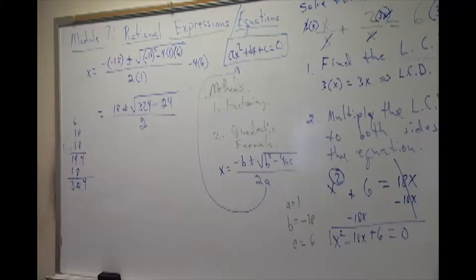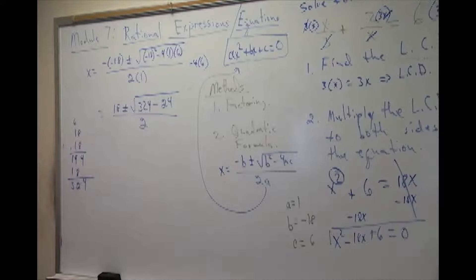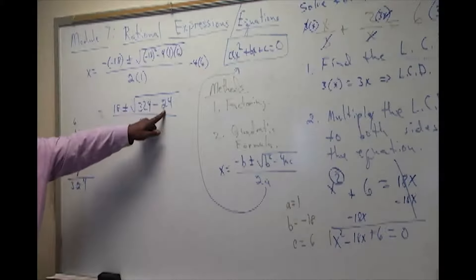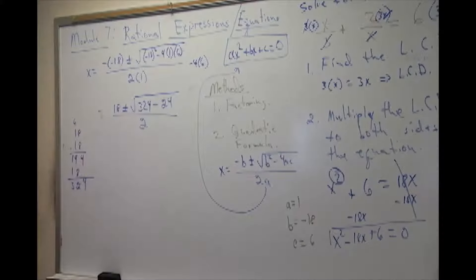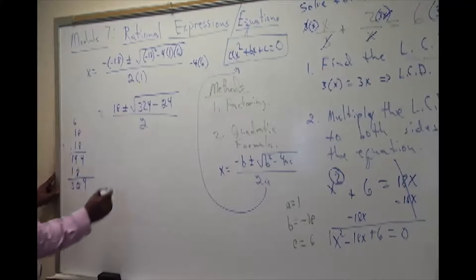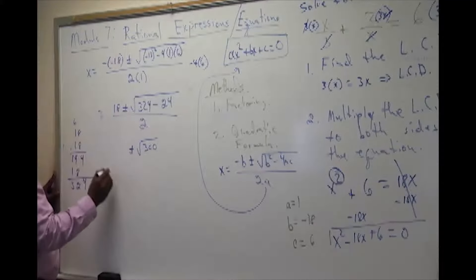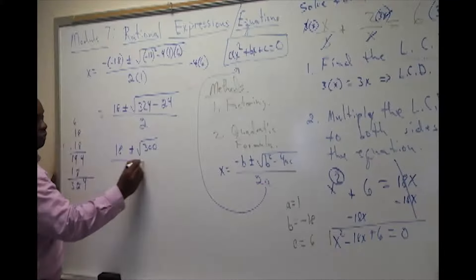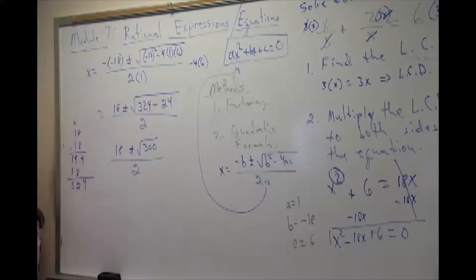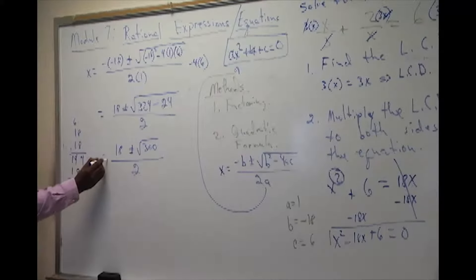From here, order of operations state that you're going to combine what's under the radical, and we subtract 24 from 324. And that will give us 300.